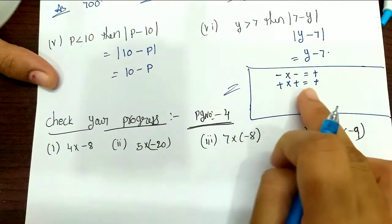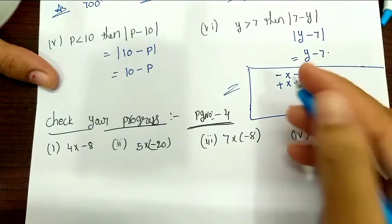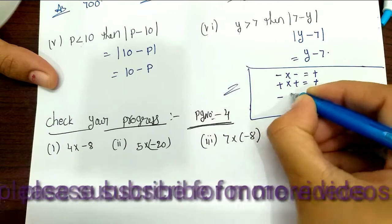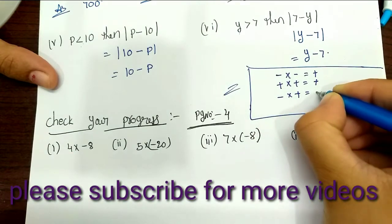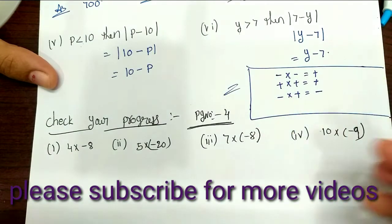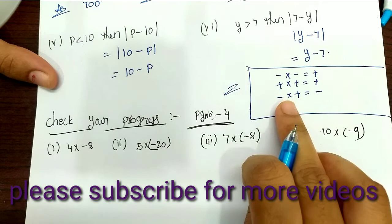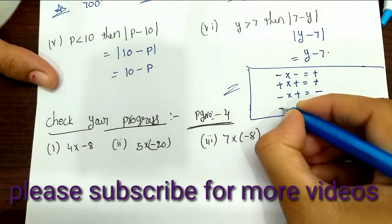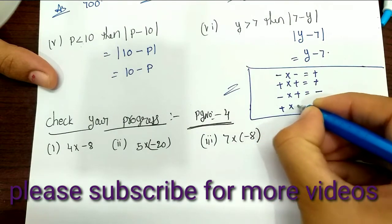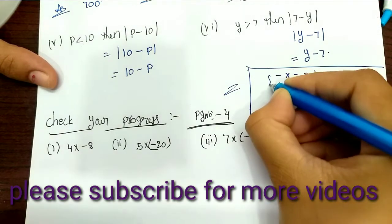Two same symbols multiply gives plus. Two opposite symbols multiply gives minus. Minus into minus gives minus.